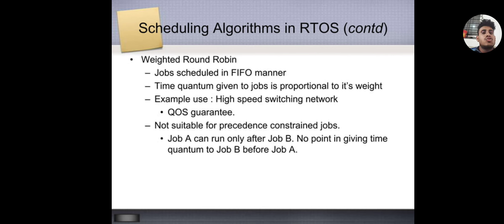Weighted round-robin: Jobs scheduled in FIFO manner. Time quantum given to jobs proportional to its weight. For example, high-speed switching network, QoS guarantee. Not suitable for precedence-constrained jobs. Job A can run only after Job B. No point in giving time quantum to Job B before Job A.